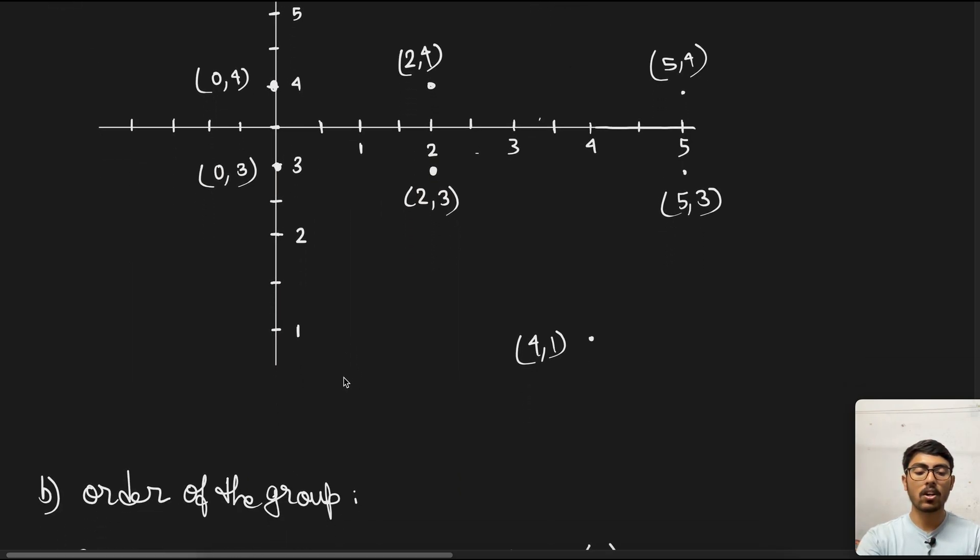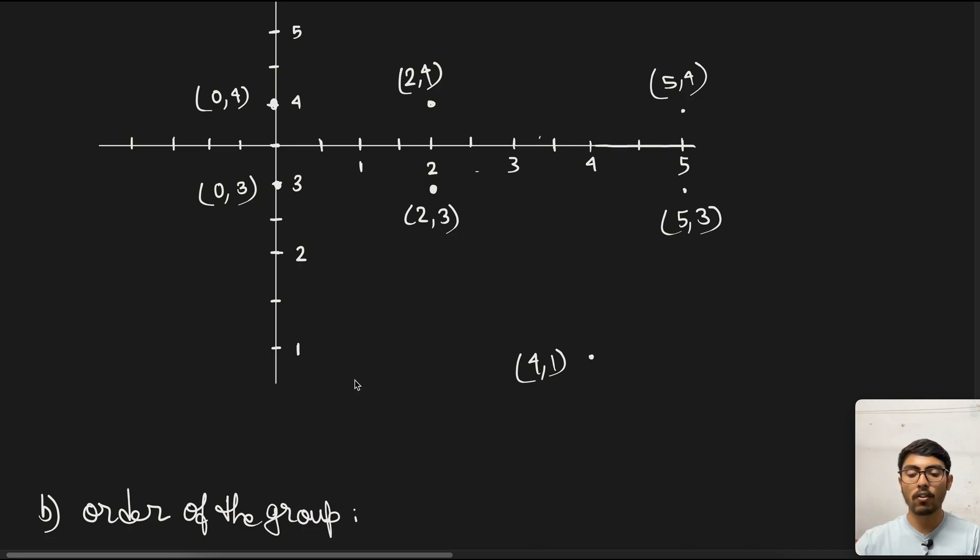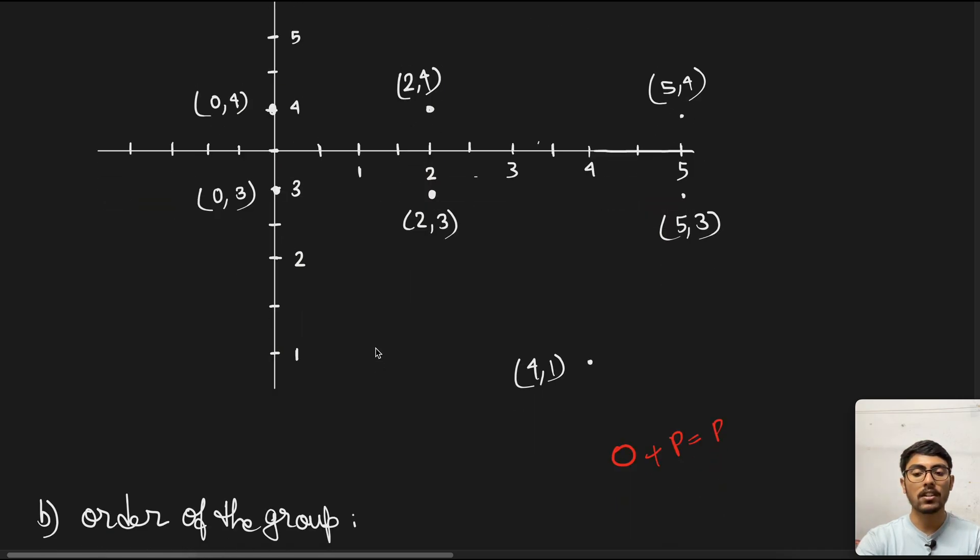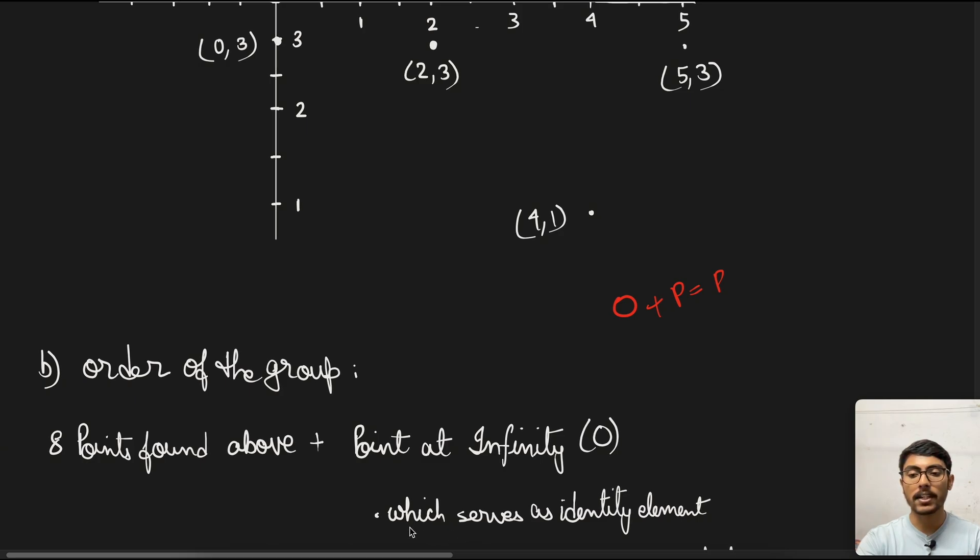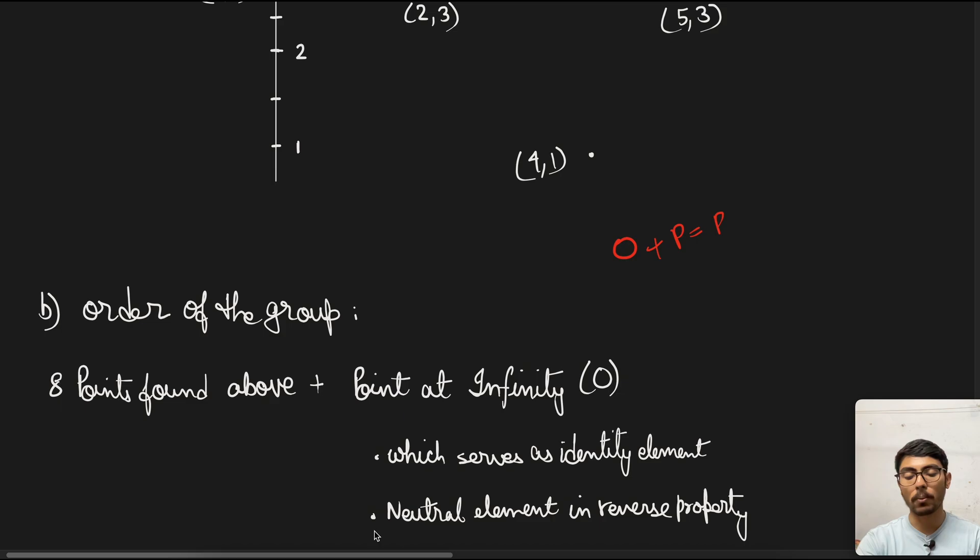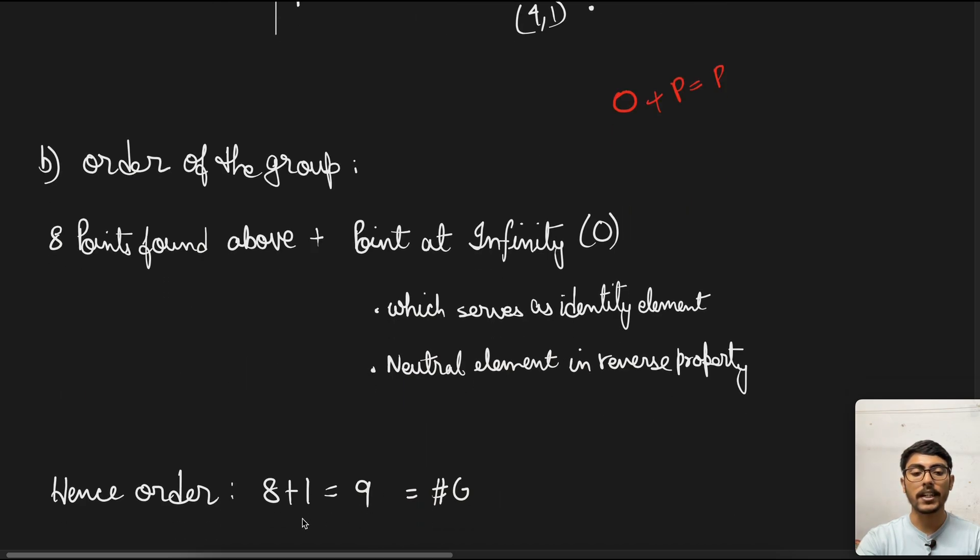Now we come to part b, which is order of the group. The points of the elliptic curve form a group, which is an algebraic structure, because there is a special point at infinity, often denoted as O, which serves as an identity element in this group. When you add this point to any other point on the curve, it returns the point itself. We have already found 8 points plus the point at infinity O. Hence, the order of the group is 8 + 1 = 9.